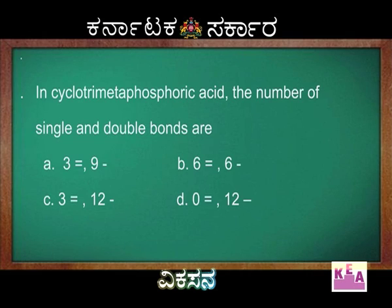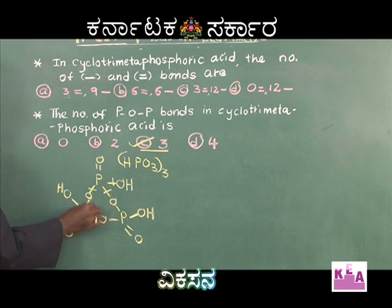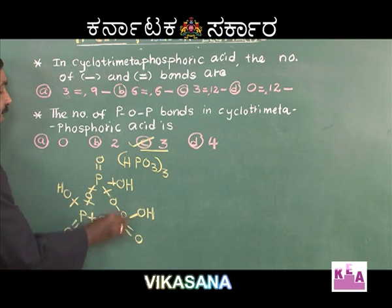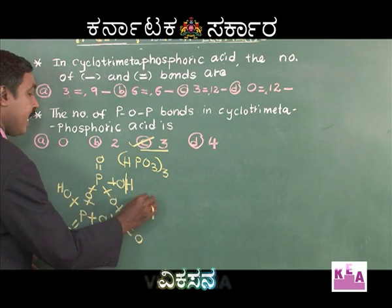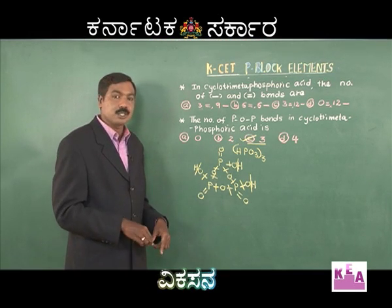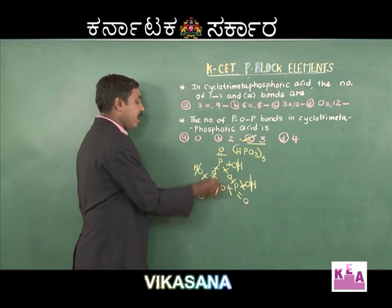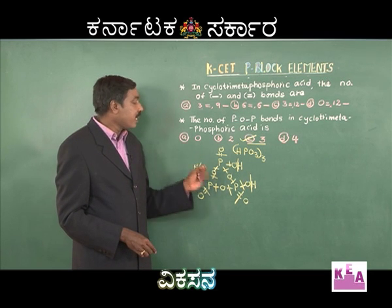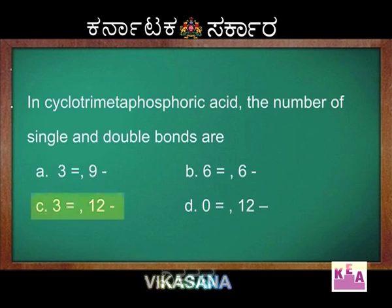Coming back to the next question: in cyclotrimetaphosphoric acid, the number of single and double bonds present. Let me count again — one, two, three, four, five, six, seven, eight, nine, ten, eleven, twelve. There is also a bond between oxygen and hydrogen. Total number of single bonds is twelve; total number of double bonds is three. Therefore, the correct answer is option C: three double bonds and twelve single bonds.